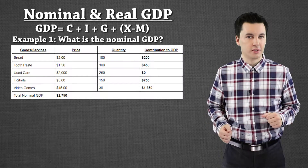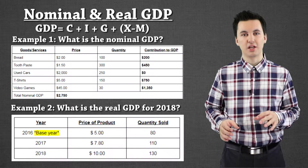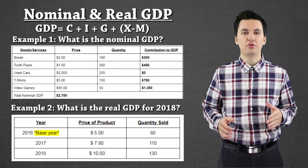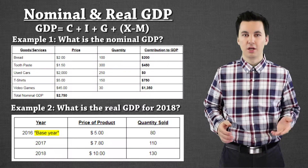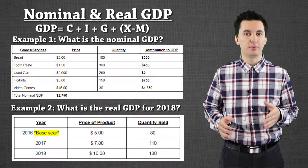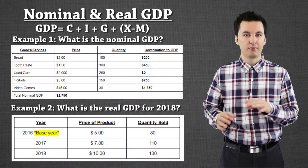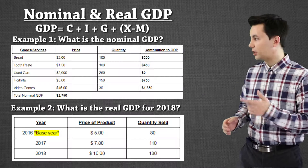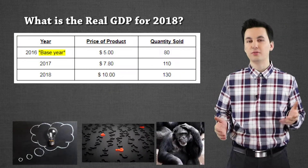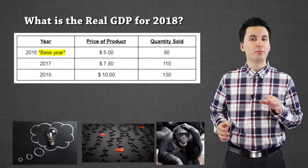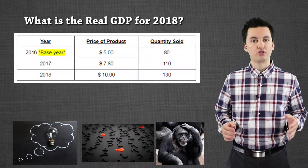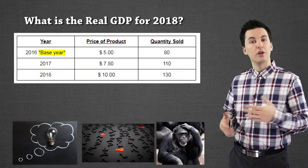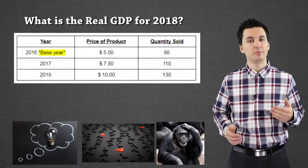Now real GDP is a little bit different. Remember, real GDP is where we're taking inflation out of the equation. You will be given a base year — the base year is going to be the year that we use that money value. So let's say we have a problem where we can see inflation has occurred and the prices are different. Originally it was $5 for a good and now all of a sudden it's $10.